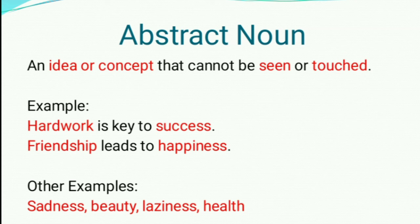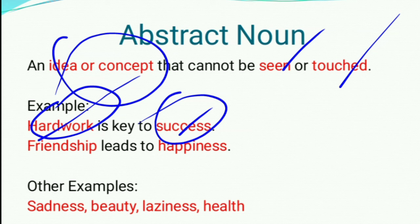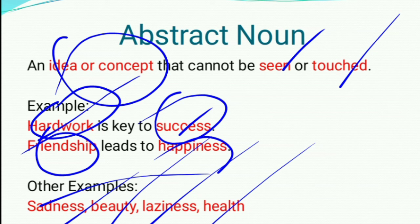Now let us see about abstract noun — an idea or concept that cannot be seen or tested. For example, hard work is key to success — hard work and success are abstract nouns. Another example: friendship leads to happiness — friendship and happiness are examples of abstract noun. Other examples: sadness, beauty, laziness, health — they are examples of abstract noun.